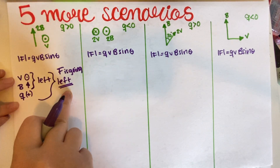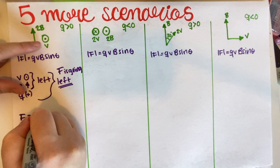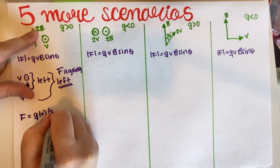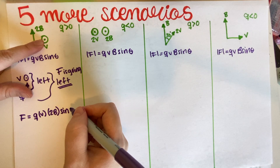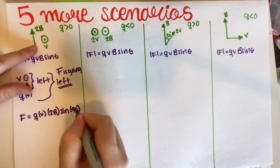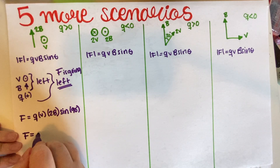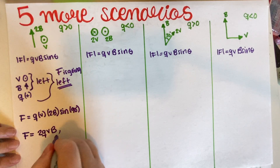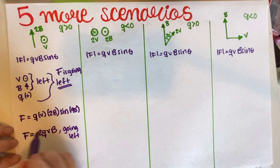So F is going to the left. The magnitude is Q times V times 2V — the two vectors have 90 degrees between them, and sine of 90 is equal to 1 — so the magnitude is 2QV Newtons going left. That's the final answer for scenario 1.